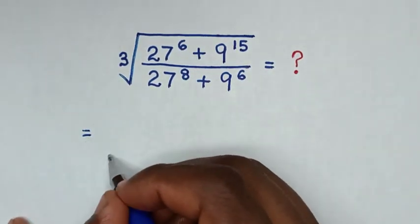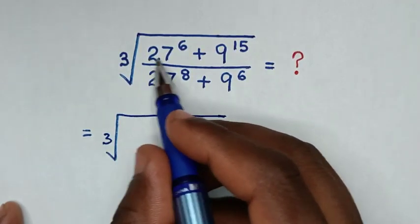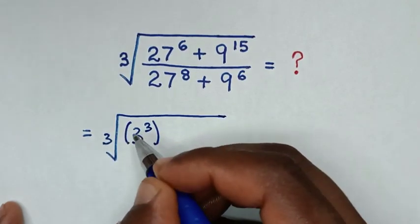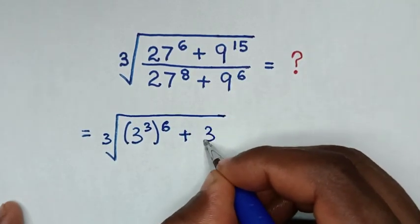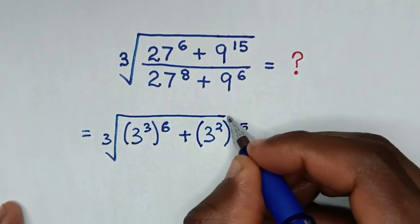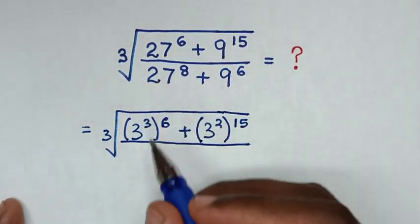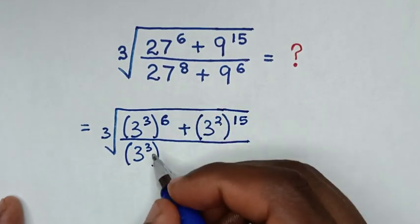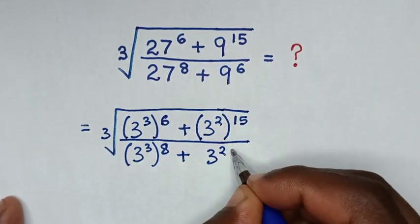It will be equal to cube root of: 27 is same as 3 power of 3, then bracket power of 6, plus 9 is same as 3 power of 2, then bracket power of 15, then over 27 is same as 3 power of 3, then bracket power of 8, plus 9 is same as 3 power of 2.